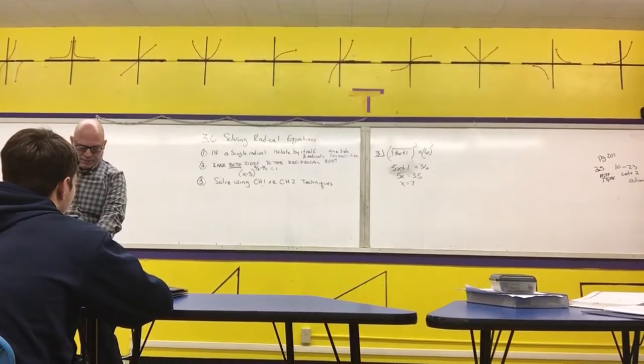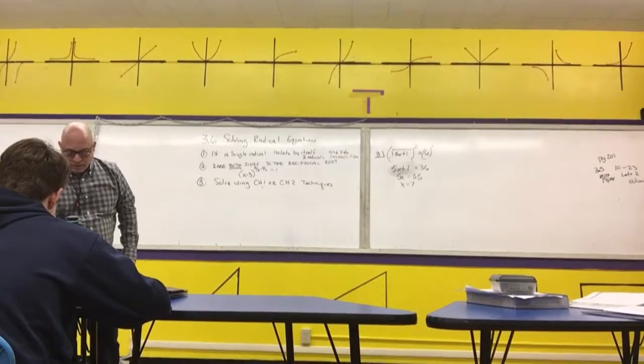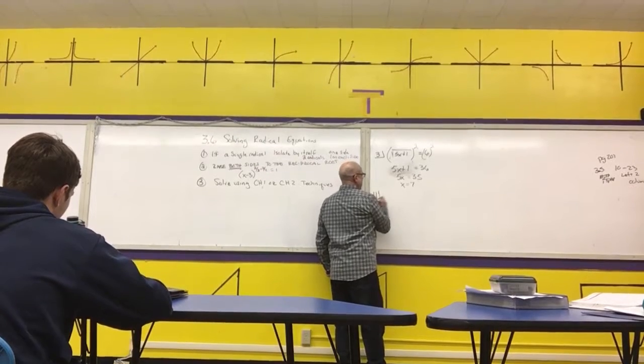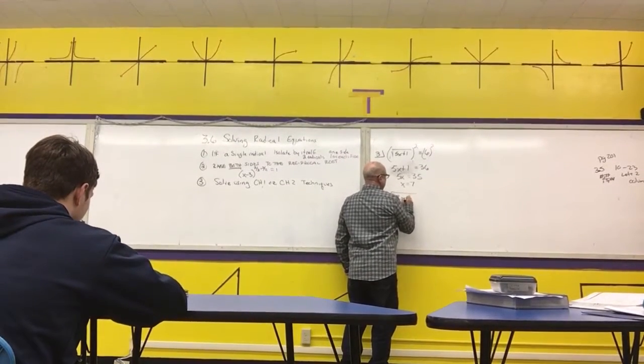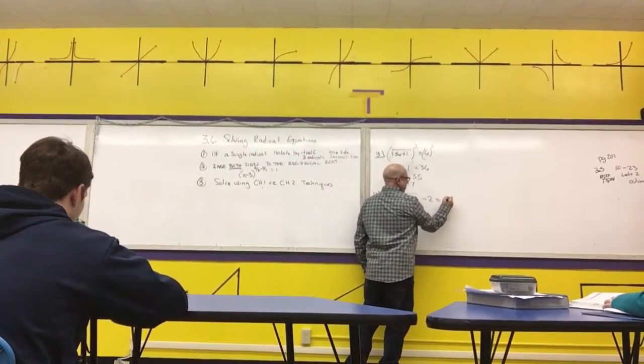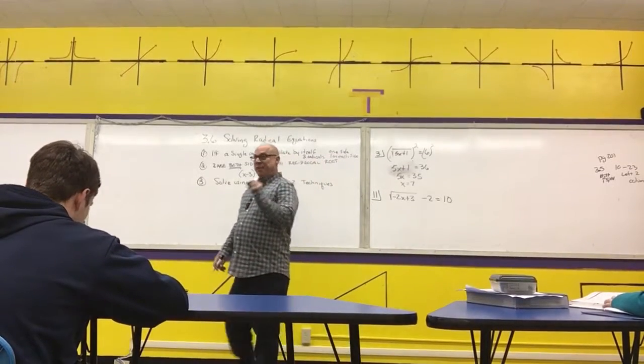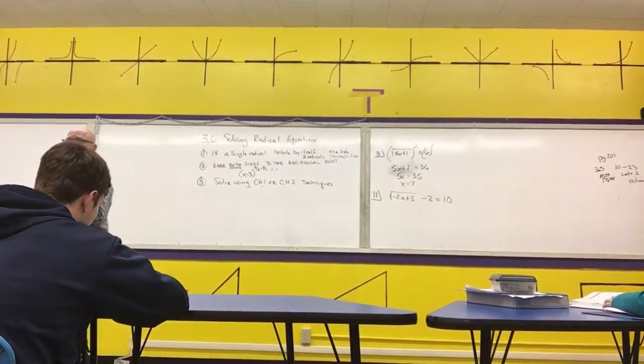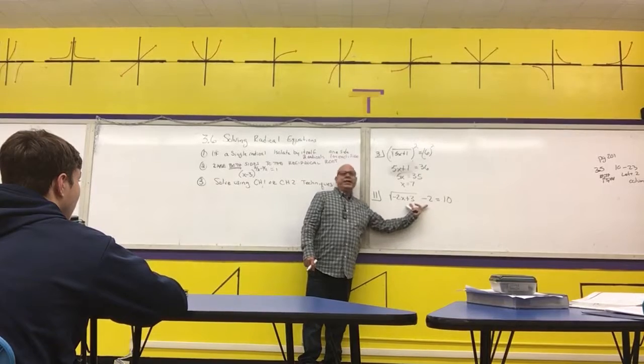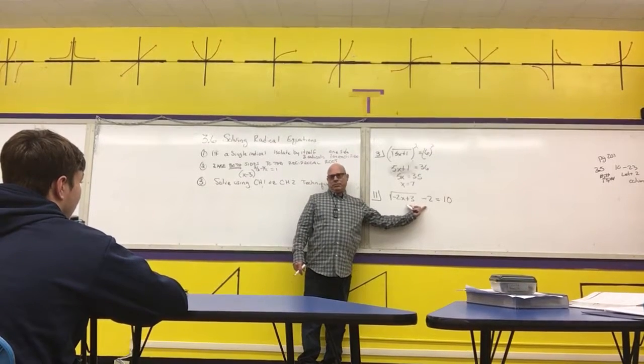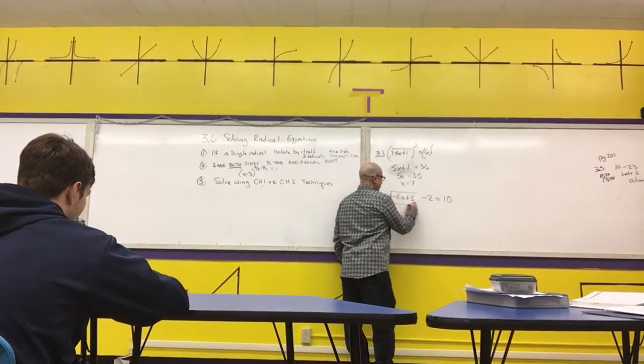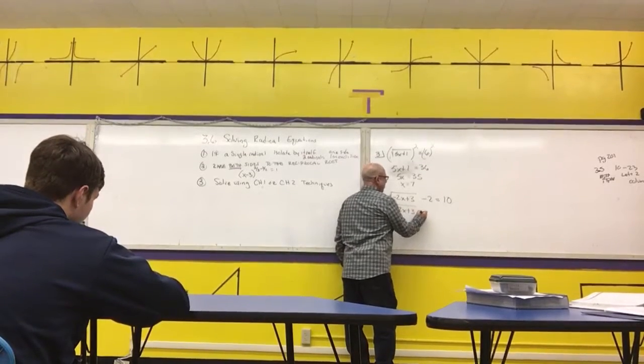Let's do problem number 11. Square root of negative 2x plus 3 minus 2 equals 10. Step 1 is to get the radical by itself on one side of the equation. You don't want this 2 hanging out here. Because if you ended up squaring this side, you'd end up with a trinomial. I'm going to move that 2 over there first.